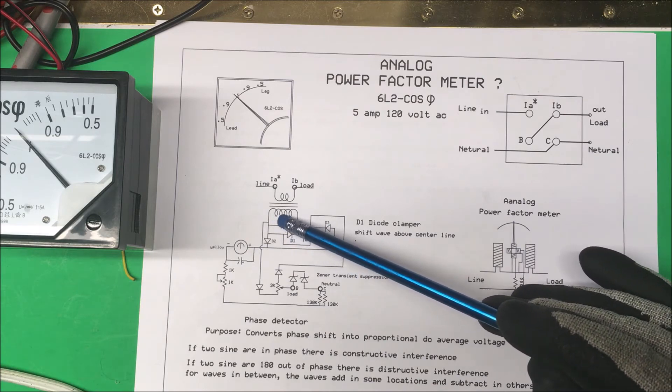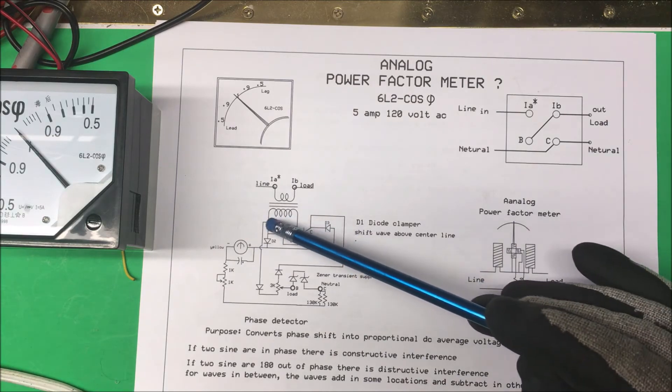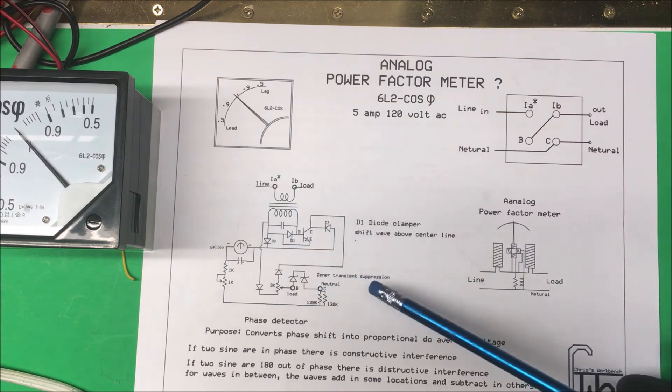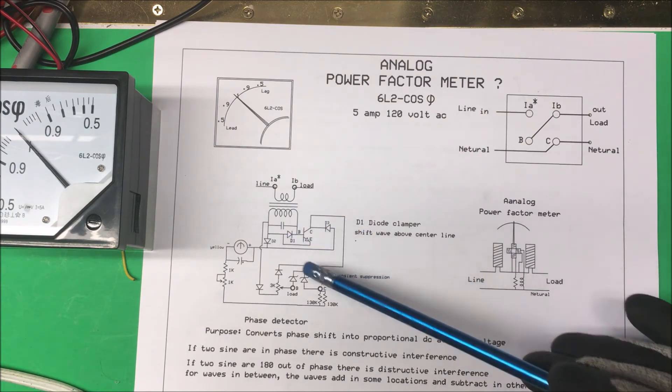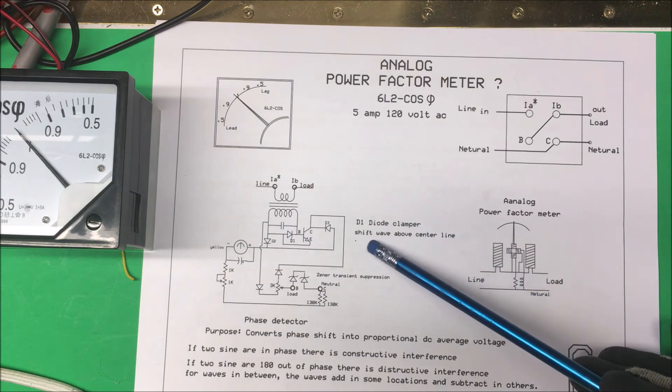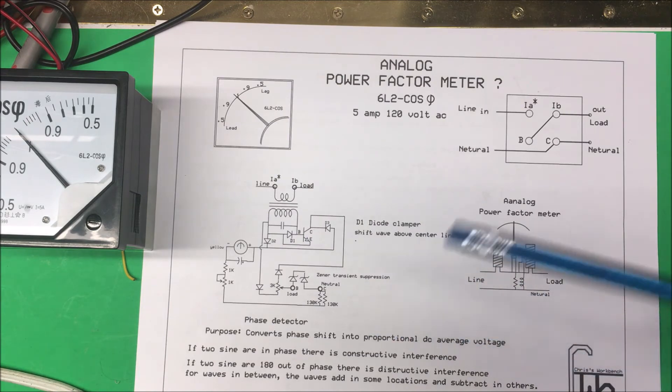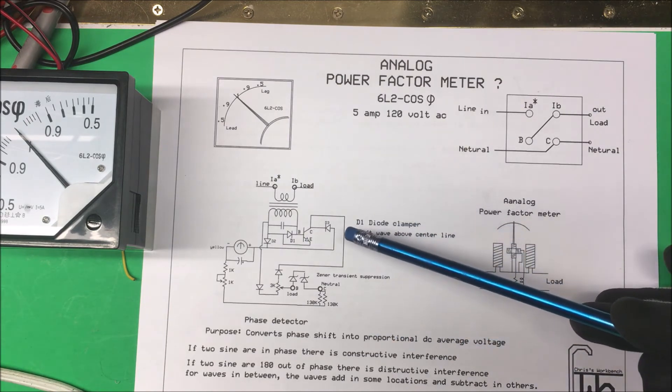It looks like the capacitor is across the coil and the diode's across the coil too. If they were in series I would say it was a diode clamper, and what that does is it shifts the waves above the center line.